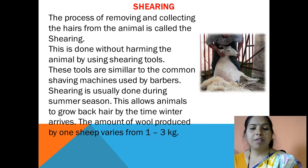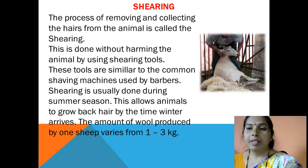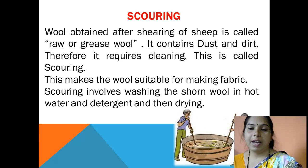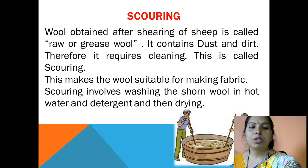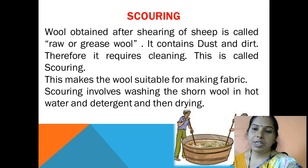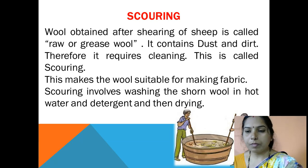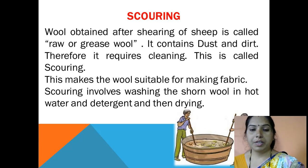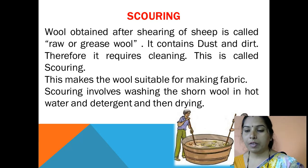Nature has given hair to animals for their own protection against the winter. The next step is scouring. The raw wool is cleaned to remove dust and dirt, making it suitable for making fabric. This step also involves washing the fleece using hot water and detergents and then drying it. In a large tank, the fleece is washed with detergent and then dried.